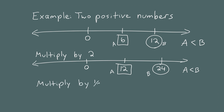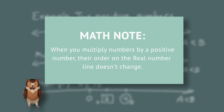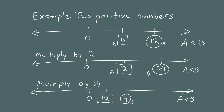Next, let's multiply the original numbers by 1/3. If you multiply 6 by 1/3, that's 6 divided by 3, and we get 2. And if you multiply 12 by 1/3, you get 4. Once again, A is less than B. The idea is this: if you multiply A and B by a positive number, the order is preserved. Whether you multiply by 1000 or 0.001, no matter what positive number you multiply them by, A will always be less than B.